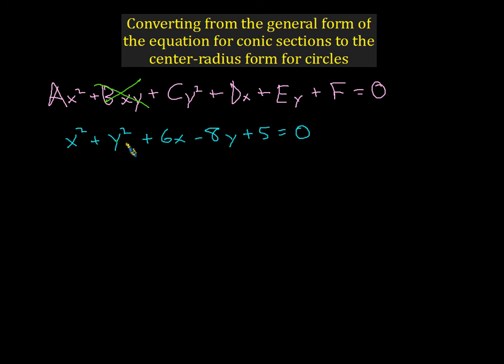In this particular case, I have an example equation here that looks like the general form up here. You'll notice our A value is 1, our C value is 1, our D value is 6, and our E value is negative 8, and our F value is 5. Now, what we'd like to do is put this into the standard form for the equation of a circle. And the way we're going to do that, completing the square. So let's go ahead and give it a try.